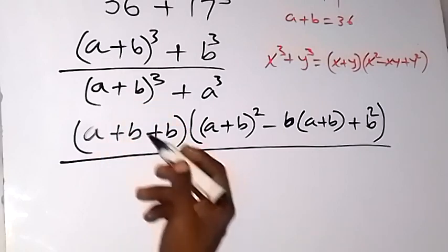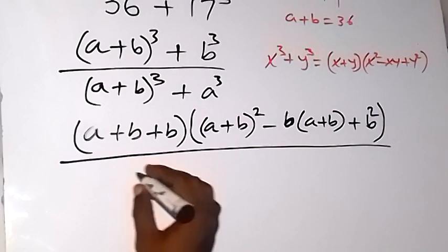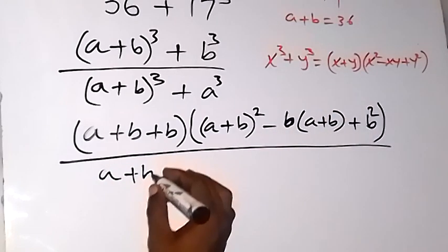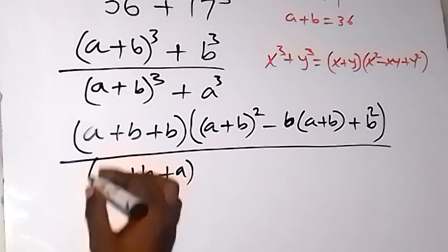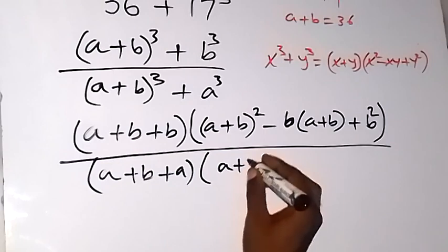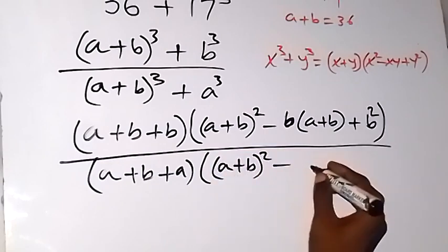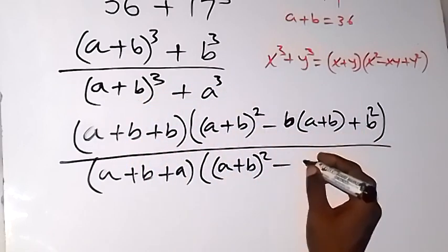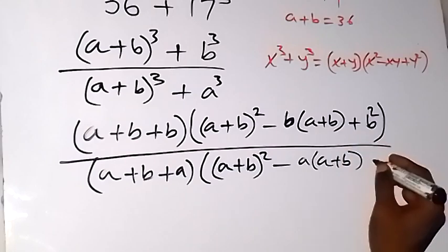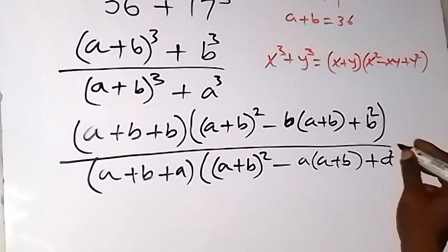For the denominator, we treat (a plus b) as x and a as y. So x plus y becomes (a plus b) plus a. Then times x squared, that is (a plus b) squared, then minus xy, which is (a plus b) times a, then plus y squared, which is a squared. Close the bracket.